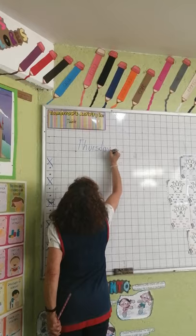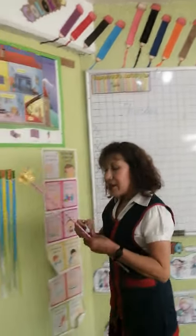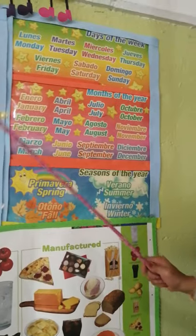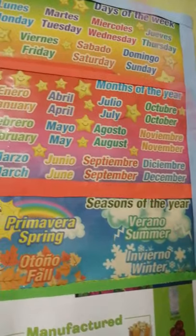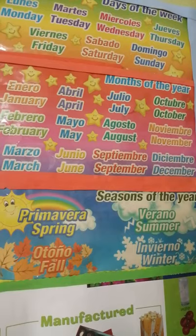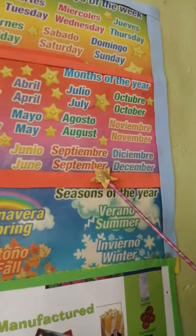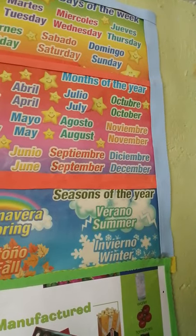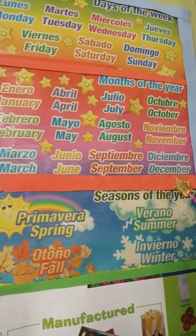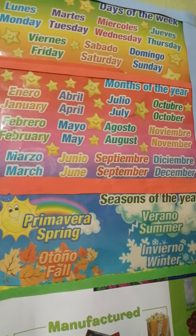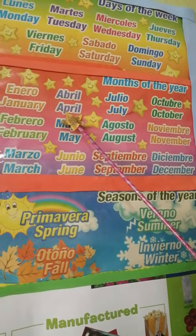We continue with the months of the year. We have here the months of the year. Everybody repeat: January, February, March, April, May, June, July, August, September, October, November, December. In what month are we, kids? We are in April. Excellent. We are in April.